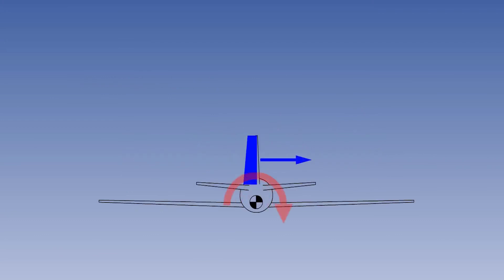If the rudder is deflected to the left, an aerodynamic force will be generated to the right, acting through the fin centre of pressure. Because the fin centre of pressure is located above the aircraft CG, a right rolling moment will be generated.